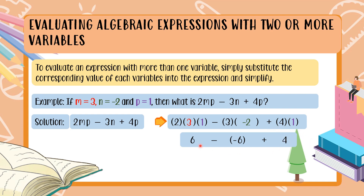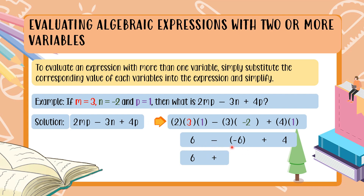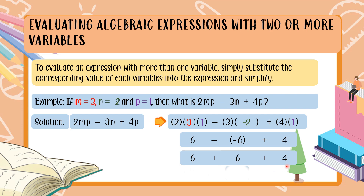Now we have subtraction, so we apply co-cha-cha: copy 6, change the minus sign to plus sign, then change the sign of negative 6 to positive 6. Bring down plus 4 — nothing changes there. Now add everything: 6 plus 6 is 12, plus 4 is positive 16.